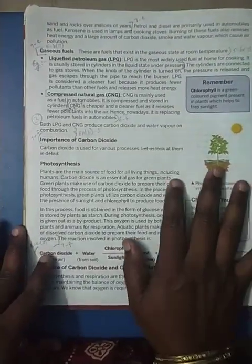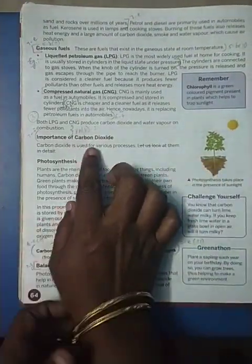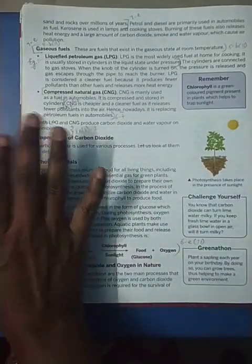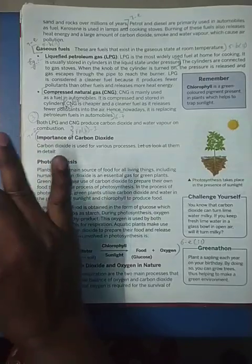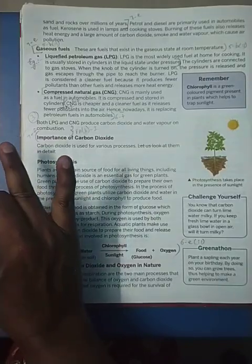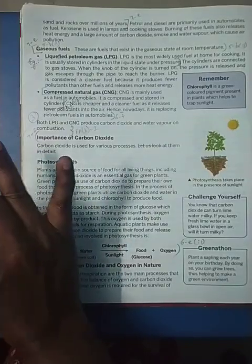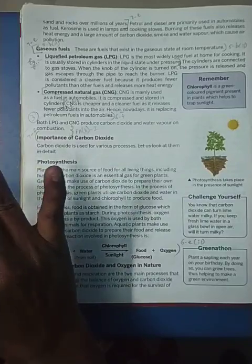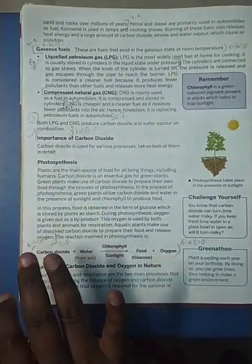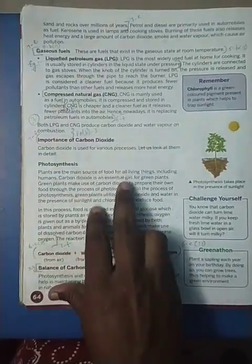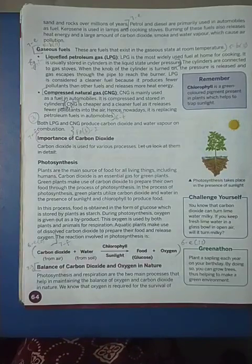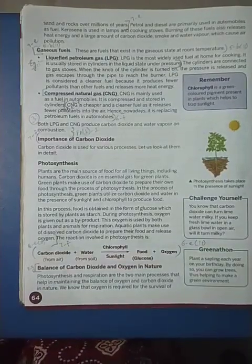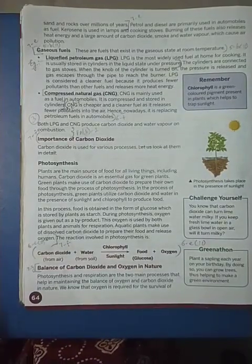Now coming to the importance of carbon dioxide. We saw the importance of oxygen — respiration and combustion, with three types of fuels: solid, liquid, and gaseous. Now, the first importance of carbon dioxide is photosynthesis. Photosynthesis is a phenomenon that happens only in the green leaves of plants.